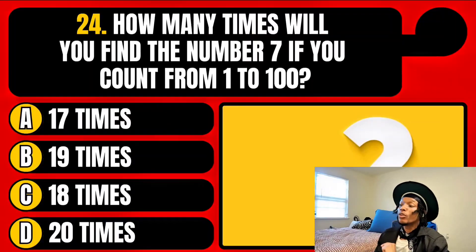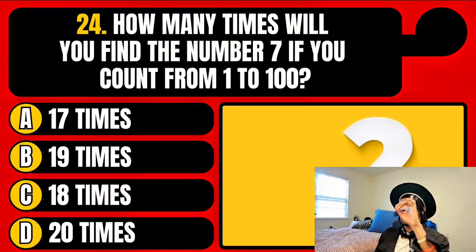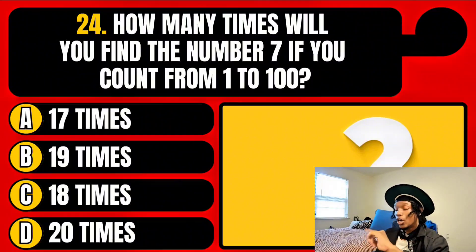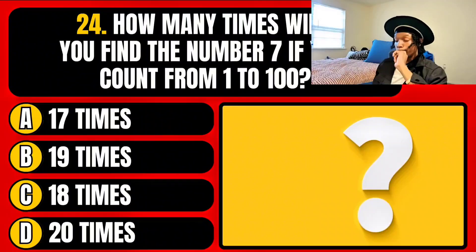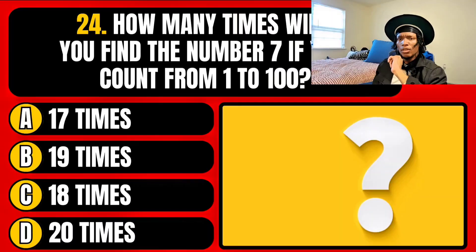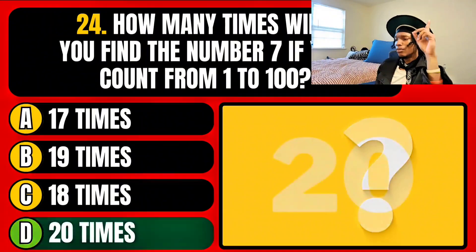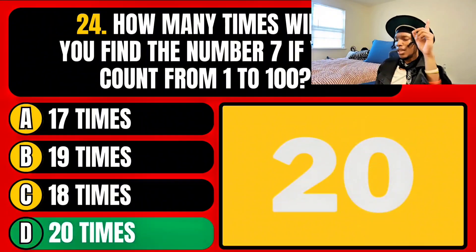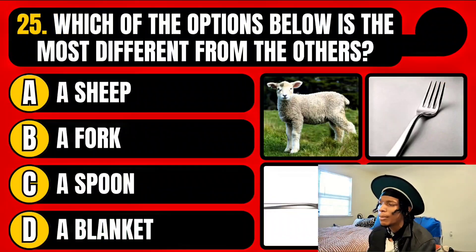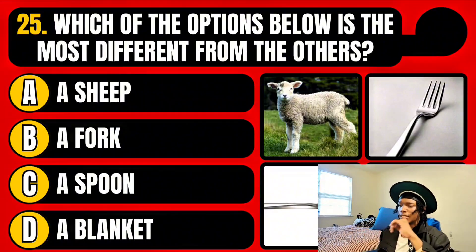How many times will you find the number 7 if you count from 1 to 100? You will find it 20 times. Would you find it 20? I believe you will find it 20 times. Yeah, it's 20 times.